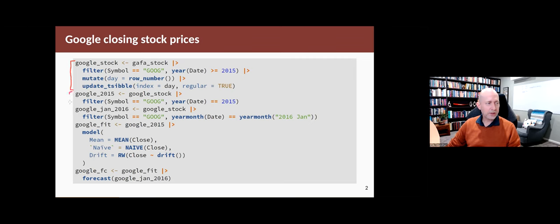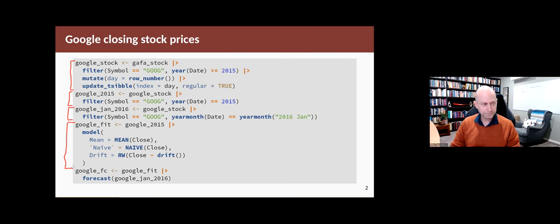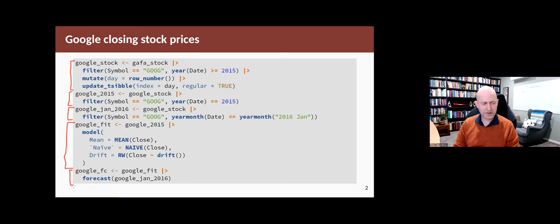Then we use 2015 as our training set and January 2016 as the test set. Then we fit three models — the three benchmark models that don't involve seasonality because stock prices are not seasonal. So we're using the mean, the naive, and the drift methods. Lastly, we take those fitted models and forecast for the periods occupied by the test set, the days in January 2016.